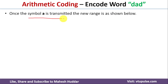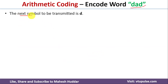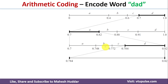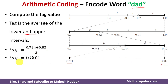Once symbol A is transmitted the new ranges are shown. The next symbol to be transmitted is D — the last symbol in DAD — so the interval for symbol D is 0.784 to 0.82. Once all symbols of the word DAD are encoded, we calculate the tag value, which is the average of the lower and upper interval: tag = (0.784 + 0.82) / 2 = 0.802. The tag is transmitted from source to destination.